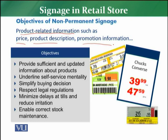What are the objectives? The first objective is that the retailer provides sufficient and updated information about the product — as much required and updated information as possible about the product price and product promotion information. All these things you have to set as an objective for non-permanent signage.